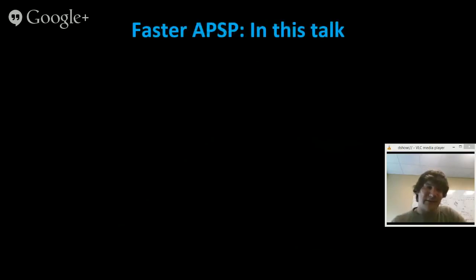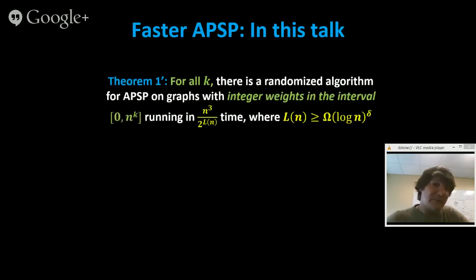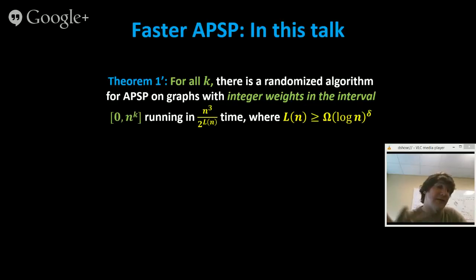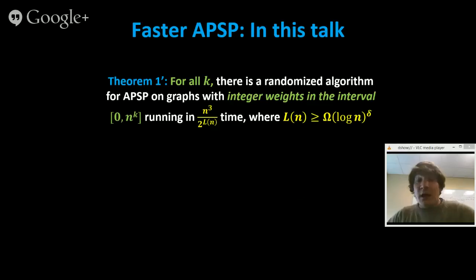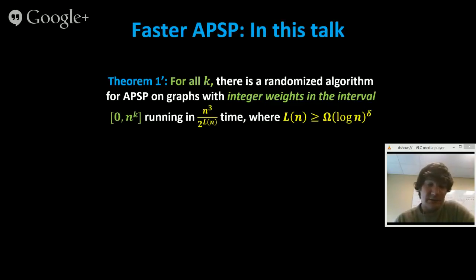We exploit a property of APSP which makes it simple from the point of view of circuit complexity, then use old tools in circuit complexity to solve the problem faster. For the case of zero-one weights, Seidel in 1995 showed you can get n^ω time in the undirected unweighted case. For directed unweighted graphs, Zwick showed n^2.6 using matrix multiplication. What makes the weighted case difficult is the weights — and the completeness reductions between problems also use the weights.